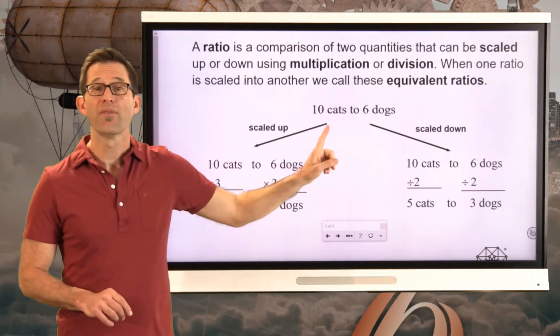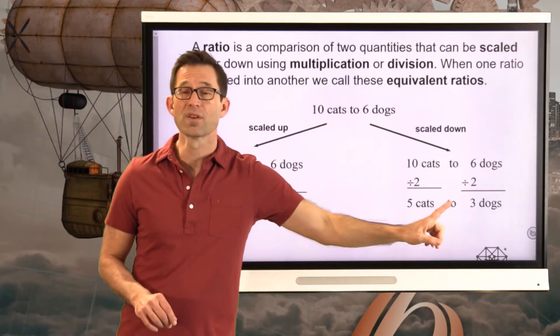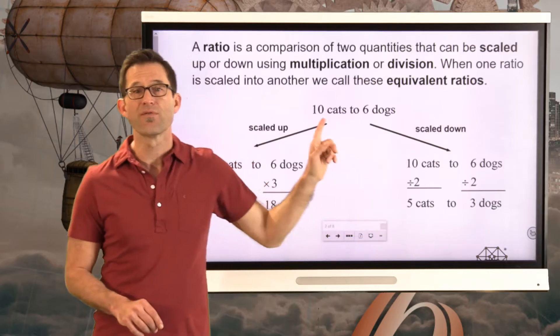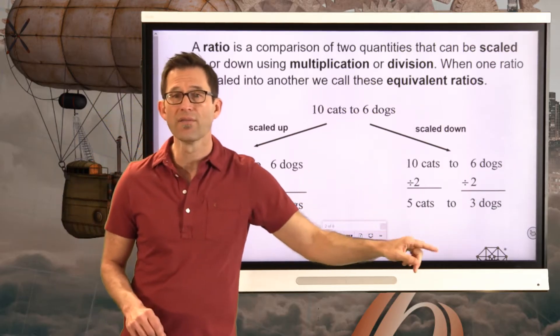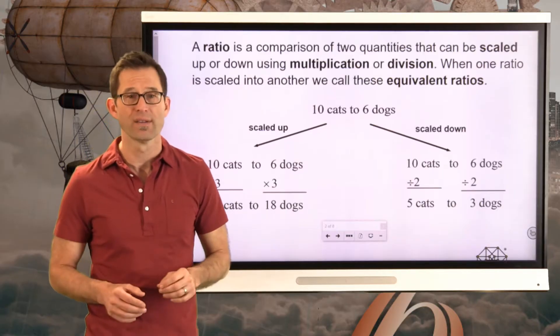On the other hand, I could divide both of these numbers by 2 and get the ratio of 5 cats to 3 dogs. This would actually be the simplest form of this ratio because I can't divide the 5 and the 3 by any common factor or common divisor at that point.